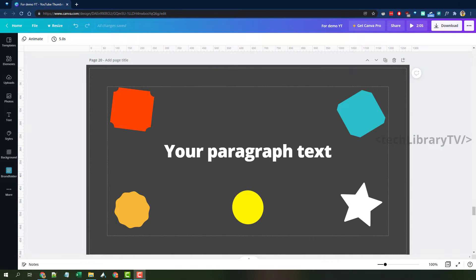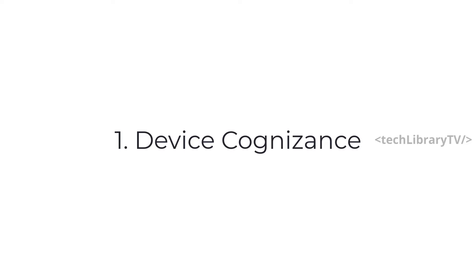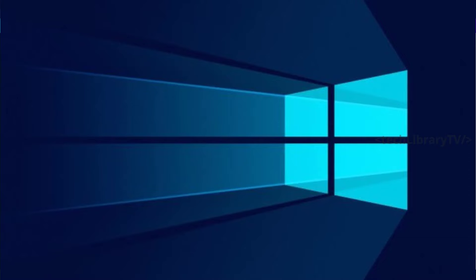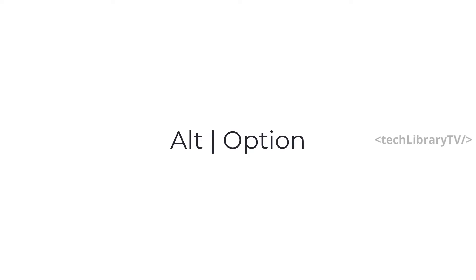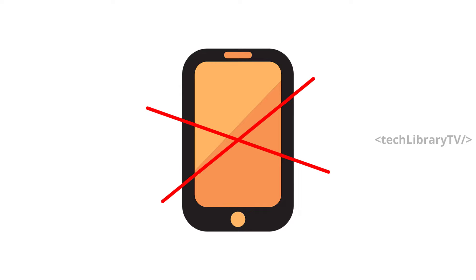Three things before we begin. First, whenever I say Alt key, that's because I'm using a Windows computer. If you are using a Mac, it should be the Option key for you. Also, these tricks may not work in the mobile version of Canva.